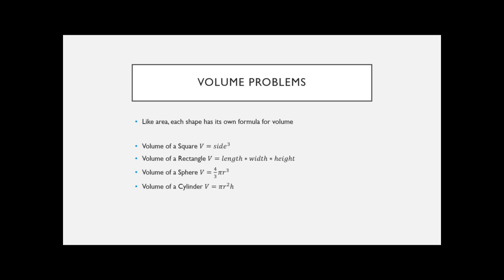Volume problems involve 3D shapes. Volume of a cube is the side cubed (s³). Volume of a rectangular prism is length times width times height (L × W × H). Volume of a sphere is four-thirds π r cubed. Volume of a cylinder is πr²h, where h is height. Usually you'll be given some information and asked to find the missing part.